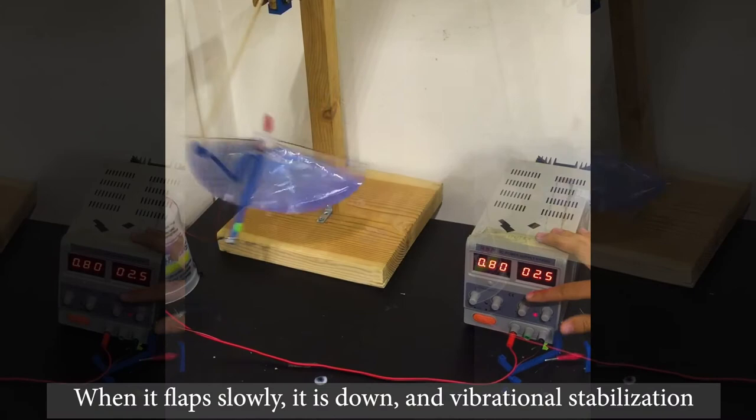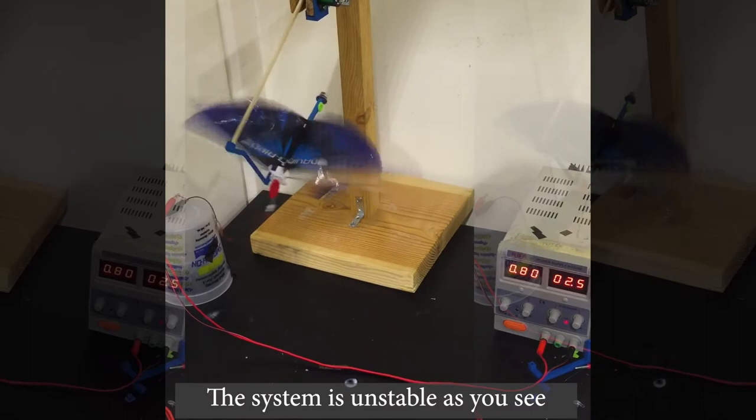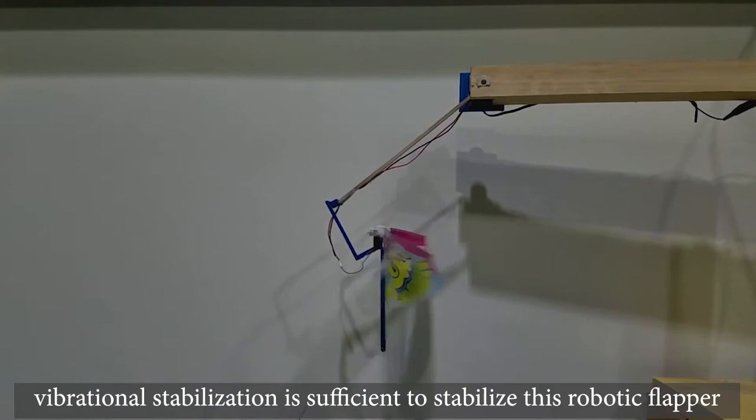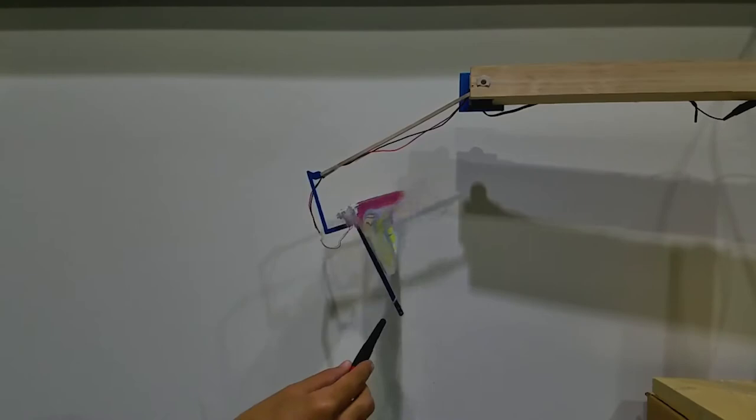If we just increase the voltage to the motor without feedback, it then flaps faster, goes up and then vibrational stabilization is sufficient to stabilize this robotic flapper. It's very robust. If we push it all the way, it comes back.